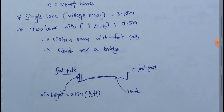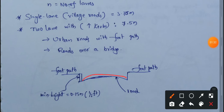Urban roads with footpaths: the minimum width of footpaths is 1.5m, and the minimum height is 0.15m, which means 15cm, or about half a foot. This also applies to bridges over roads, where footpaths are also included.